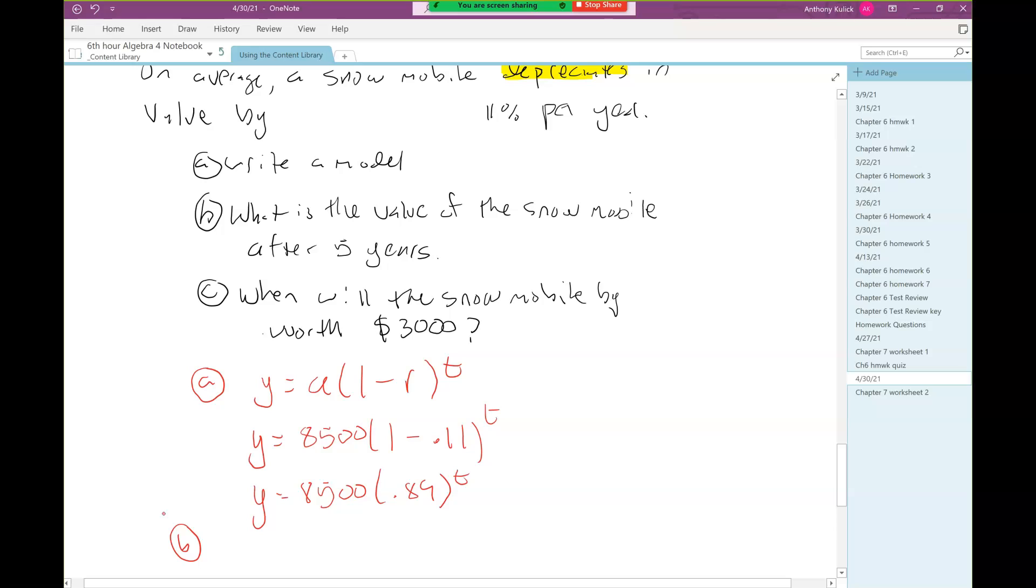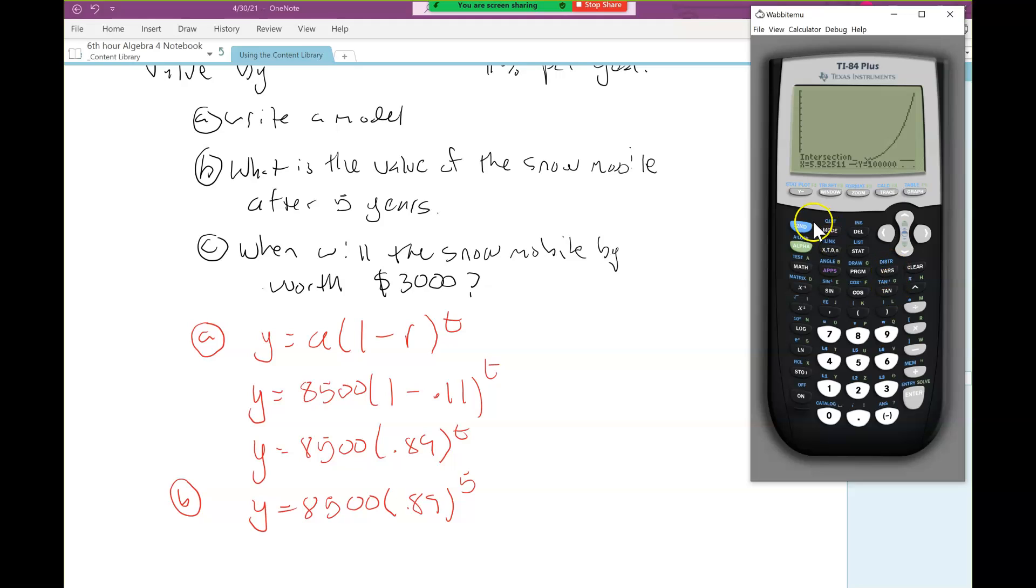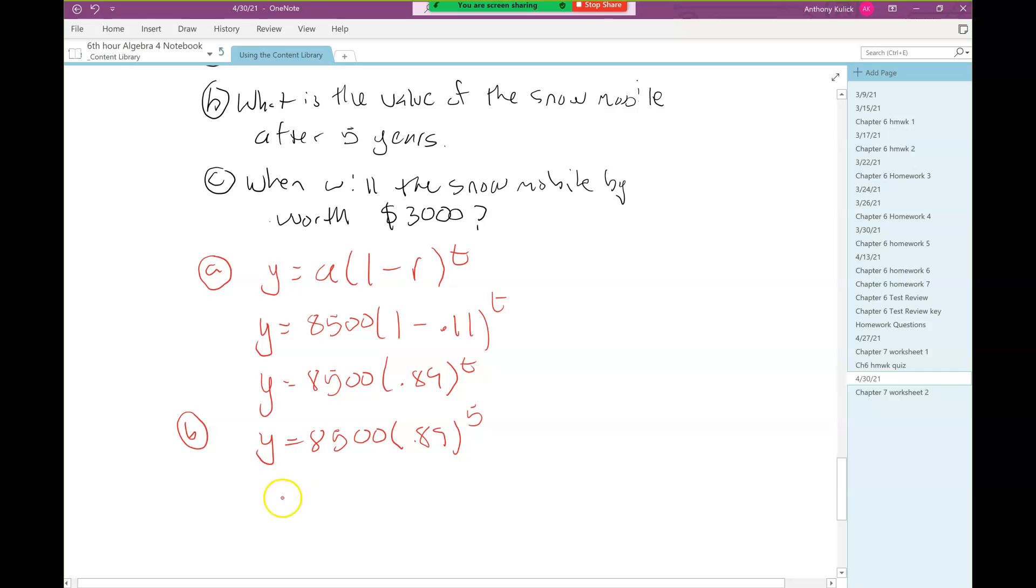Part B asks, what is the value of the snowmobile after 5 years? We're looking for y. To find y, we have to put in a value for t. What value of t are we going to plug in? 5. So we just go to our calculator. So $4,746.45.